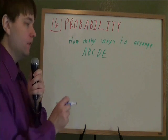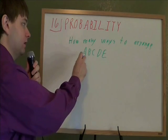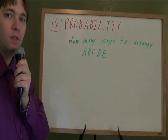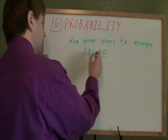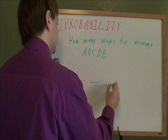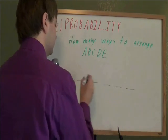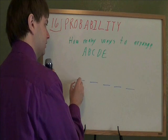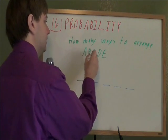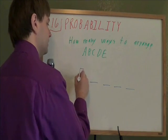Here we have a probability problem. How many different ways can you rearrange the letters a, b, c, d, e? Well, when you rearrange these, you're going to have five different letters still. So for the first choice, how many letters could you put in front? Well, a, b, c, d, e. There's five different letters that could be the first letter.